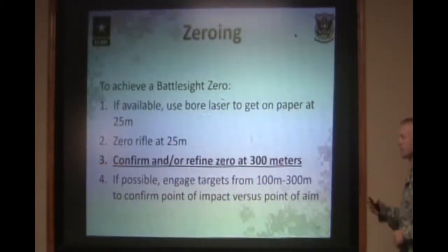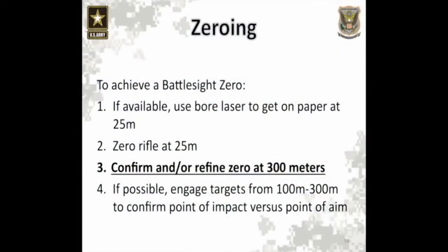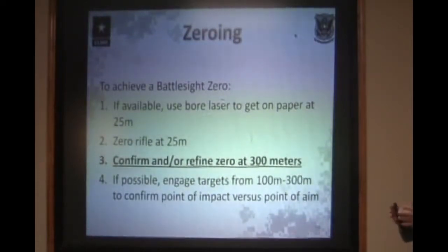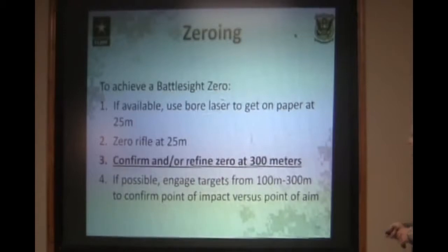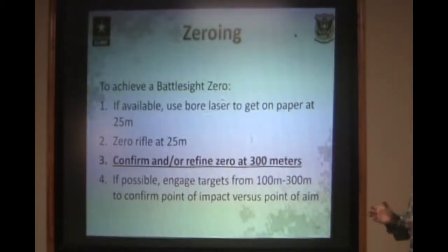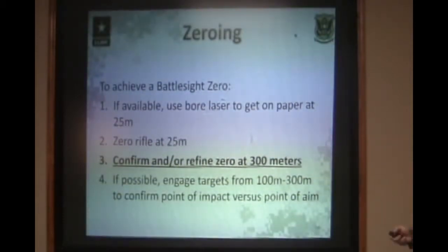Next you need to confirm and refine your zero at actual distance — meaning at 300 meters. A 25-meter zero is good to have on the rifle, but when you move to the 300-meter range, that zero could be off by several inches one way or the other, and you couldn't tell at 25 meters. If possible, you need to engage targets from 100 to 300 meters to ensure that zero is good — to make sure you're not out to the left, out to the right, too high, or too low. If you shoot targets at each known distance from 100 to 300 meters, you can ensure that your zero is solid.